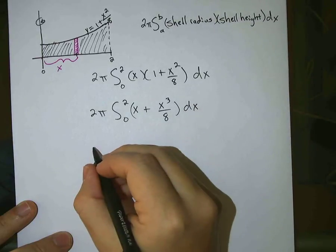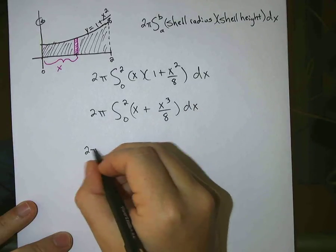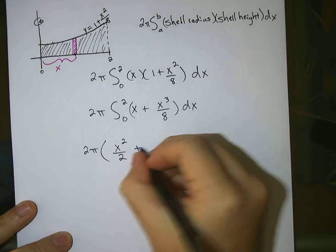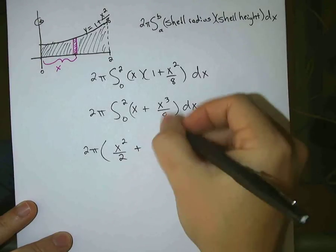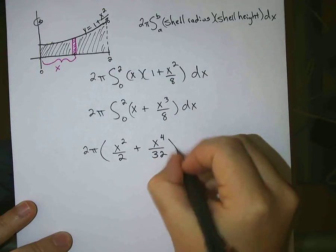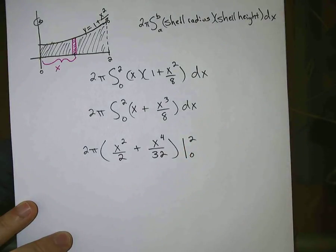And go ahead and take the integral, so it's 2 pi, times x squared over 2, plus x to the 4th, bring the 4 down with that 8, and it becomes 32. From 0 to 2, from 0 to 2.